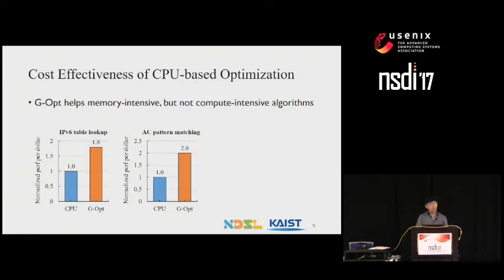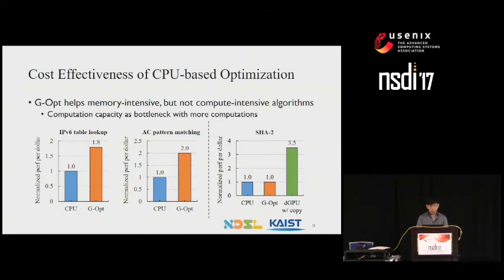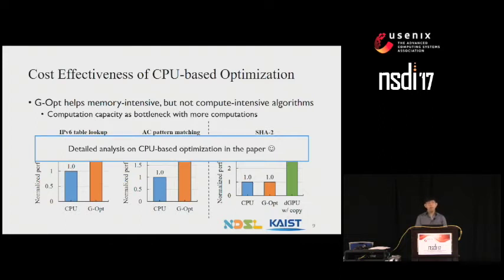We first look at the cost-effectiveness of optimizing CPU code with GOPT. We confirmed that GOPT does improve the performance of memory-intensive algorithms consisting mostly of memory I/O instructions, such as IPv6 table lookup and Aho-Corasick pattern matching. However, applying optimization on computation-heavy algorithms such as SHA-2 has negligible effect on performance, as computation capacity becomes the main bottleneck. On the other hand, discrete GPU with DMA transfer successfully improves performance thanks to its high computation power, with similar results for CHA-CHA, POLY, SHA-1, and RSA. This demonstrates that many network applications exploit the large computation power of GPU.